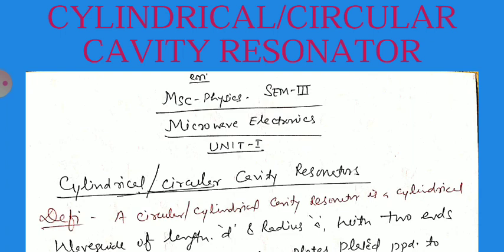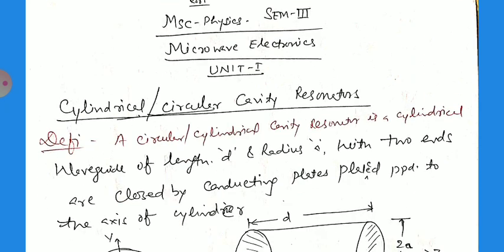Last time we discussed the rectangular cavity resonator, the equations and the resonance frequency. Today we start from the definition of the circular or cylindrical cavity resonator. A circular or cylindrical cavity resonator is a cylindrical waveguide of a particular wavelength D and radius A with two ends closed by conducting plates.